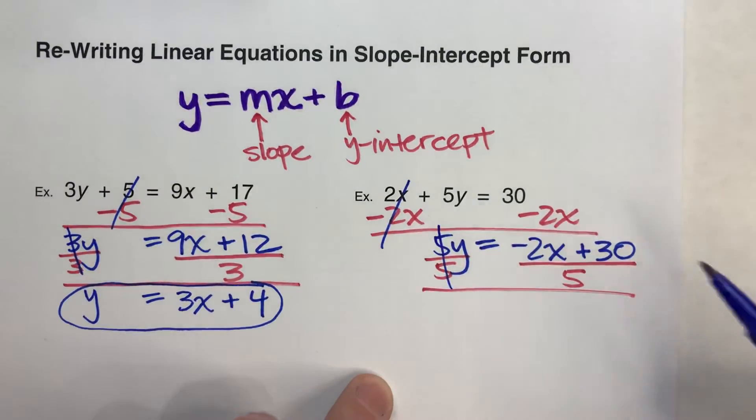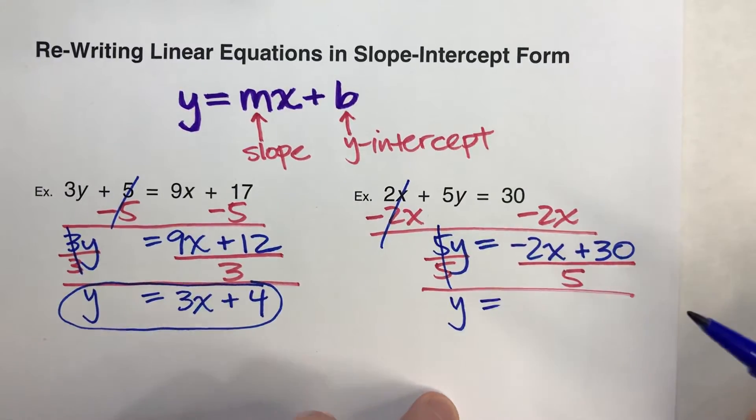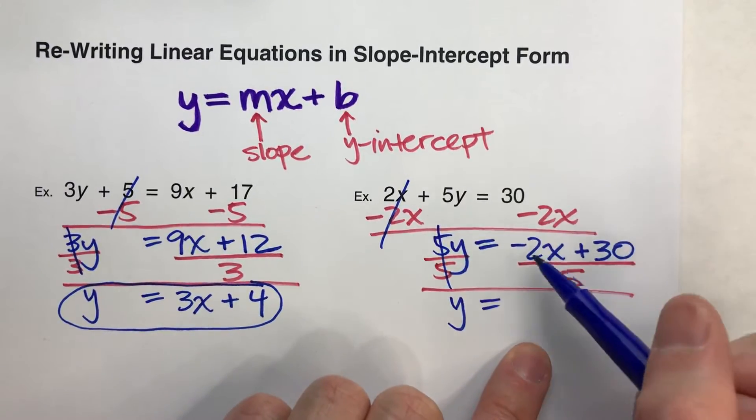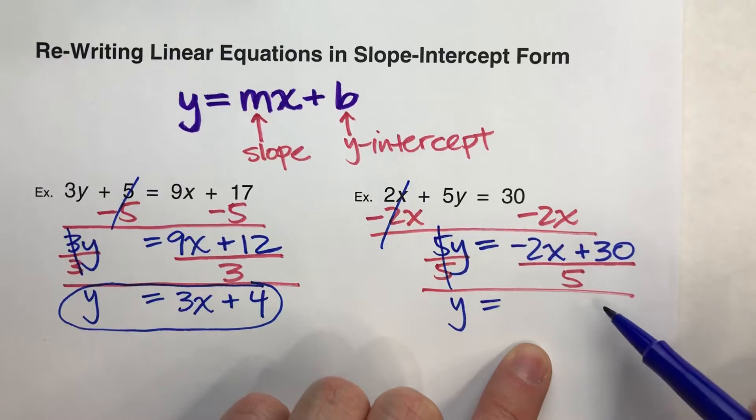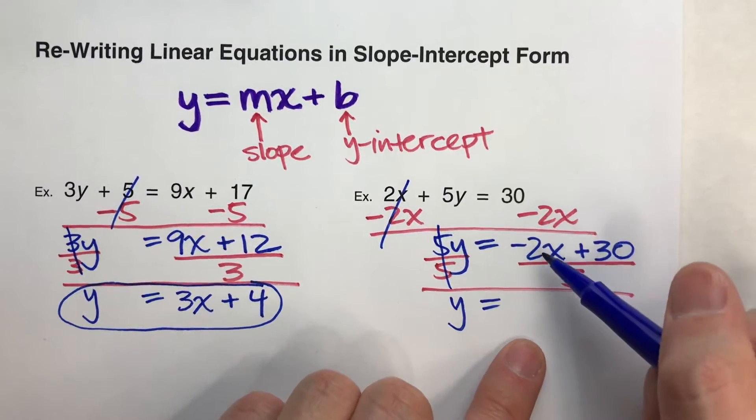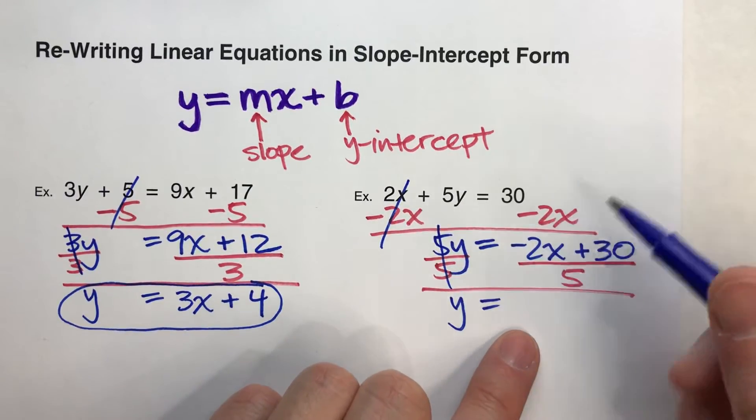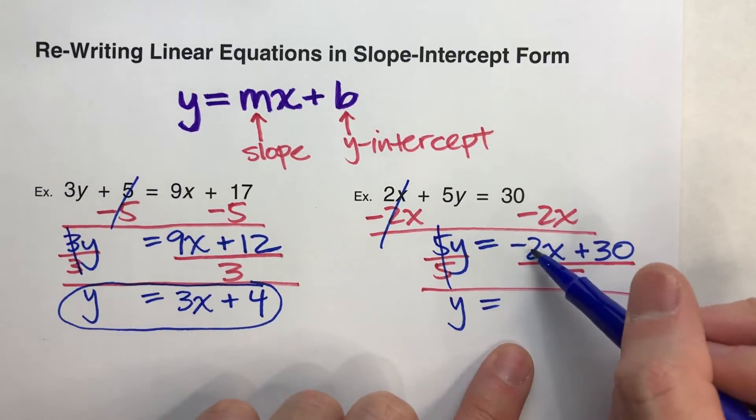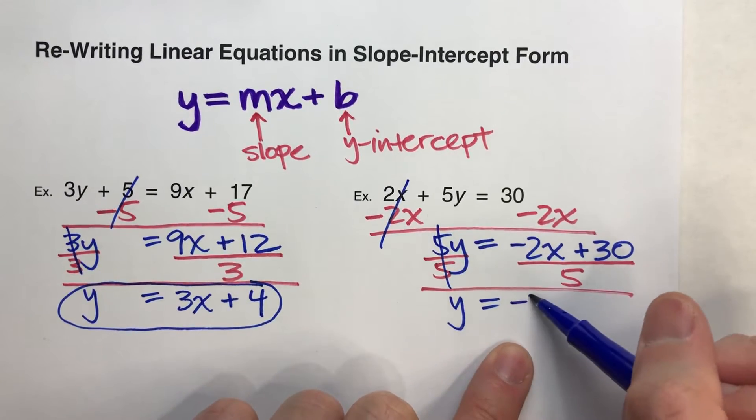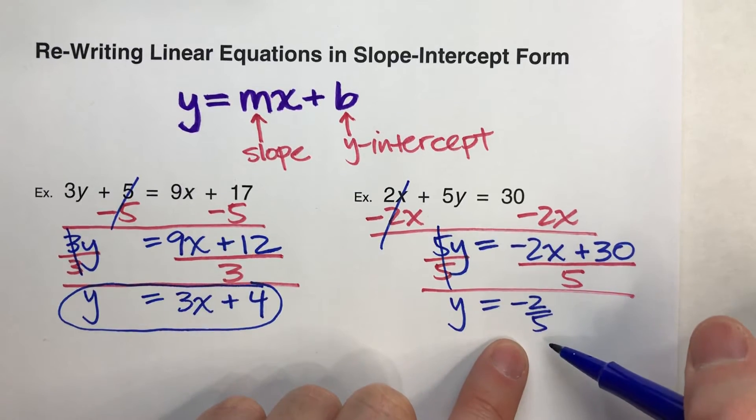When I do that, the 5s undo each other, but the y drops down. On the other side, I have to divide everything by 5. I've got negative 2x divided by 5. Negative 2 doesn't divide by 5 and get a whole number, so I'm going to keep it as a fraction. Negative 2 divided by 5 is negative 2 fifths.